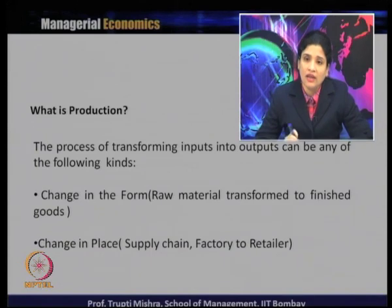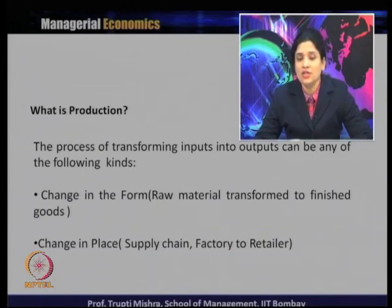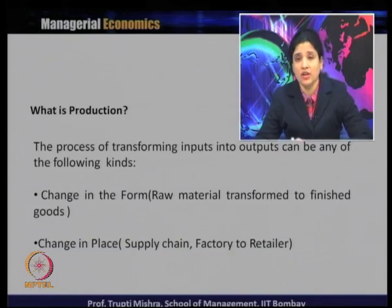The second category is change in place, where we talk about the supply chain — how output moves from factory to retailer. Output generally gets produced in the plant or factory, but until it reaches the retailer and the market, it is not available for individual consumption. So the second form of transformation, which is also part of the production activity, is the change in place.